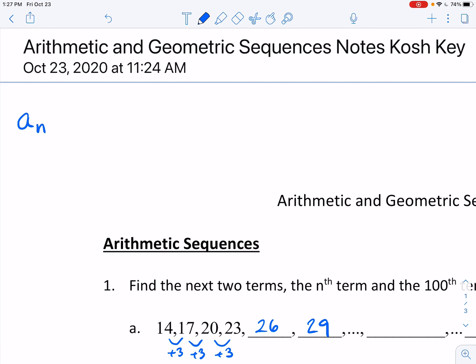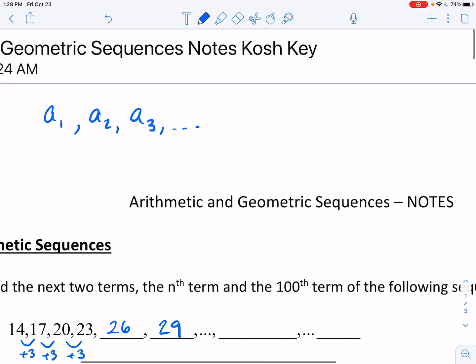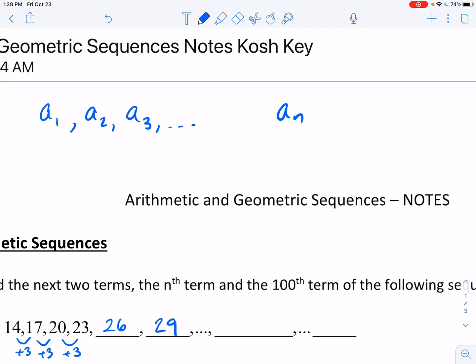I probably should back up a little bit farther. What we'll do is we'll typically say a sub n is one way that we can name our sequence. And this is the nth term of a particular sequence. So if you would have, we'd have a sub 1, a sub 2, a sub 3, and then somewhere out here is the nth term.